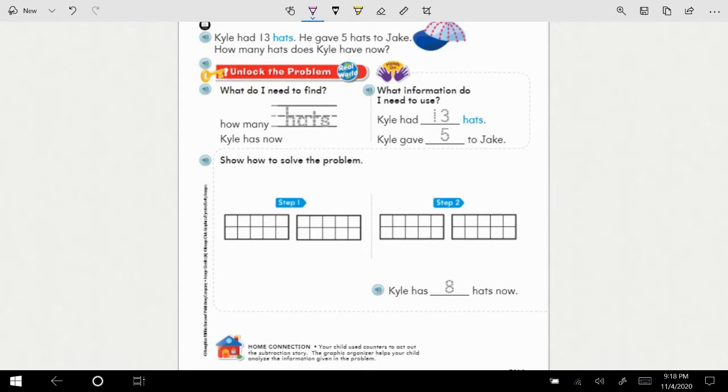This is the first page, page 241. It starts here with a baseball cap at the top. This has Kyle has 13 hats, and he gave five hats to Jake. How many hats does Kyle have now? So the first thing we need to identify are the clues in the story. We have 13, and we have five. We also have this word gave, which gives us a clue that we're taking away from the whole.